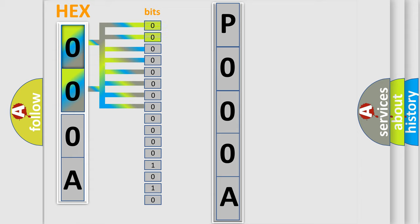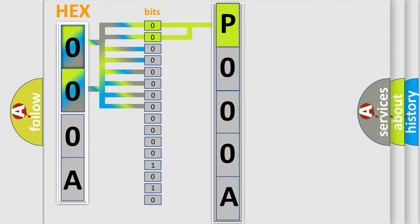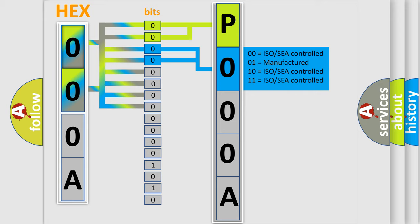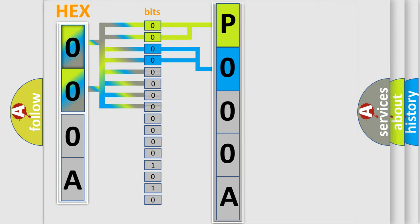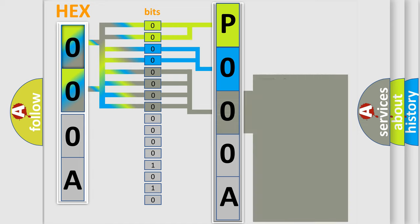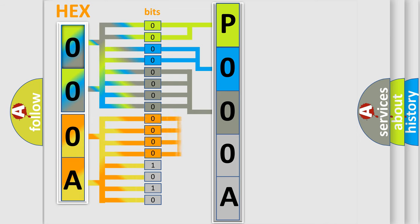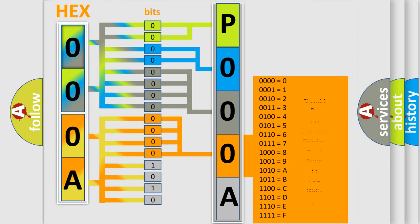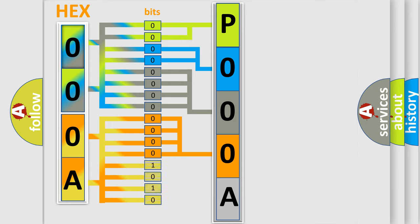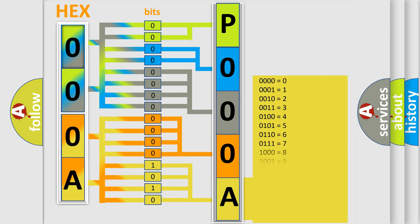Zero means low level; one means high level. By combining the first two bits, the basic character of the error code is expressed. The next two bits determine the second character. The last four bits of the first byte define the third character of the code. The second byte is composed of a combination of eight bits: the first four bits determine the fourth character of the code, and the combination of the last four bits defines the fifth character. A single byte conceals 256 possible combinations.